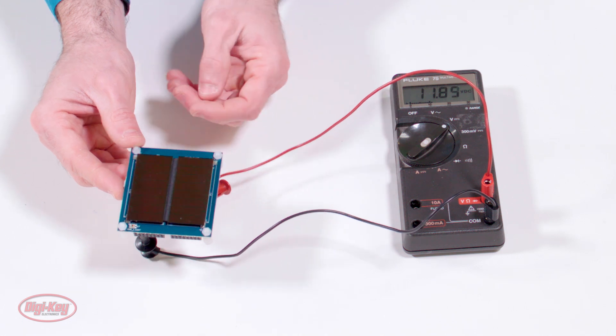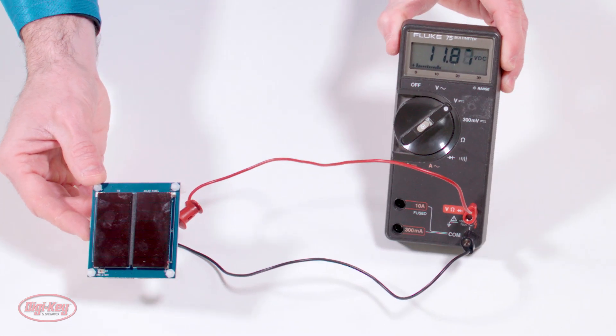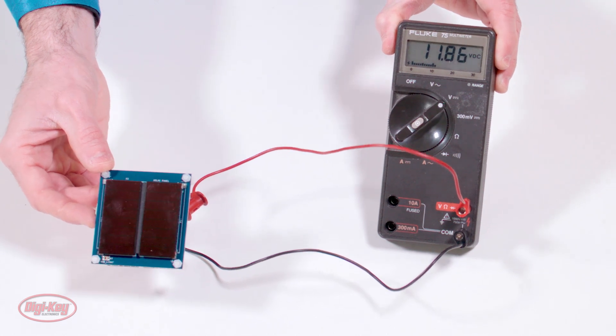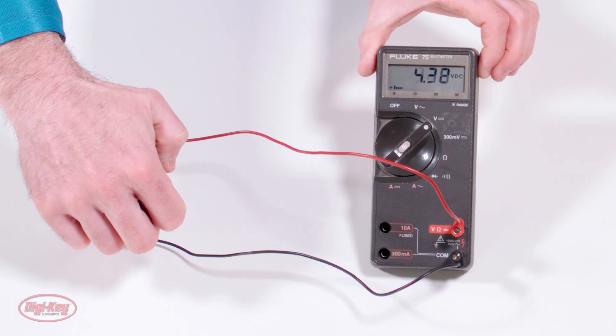So as you can see, the voltage obviously changes with more light. We're looking over here. And I'll put my hand over it. And it drops down significantly.